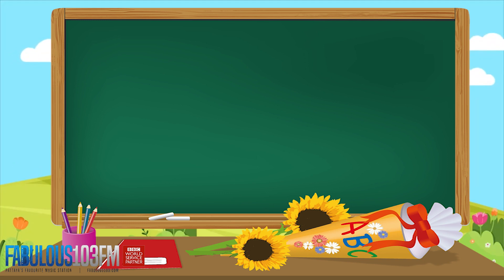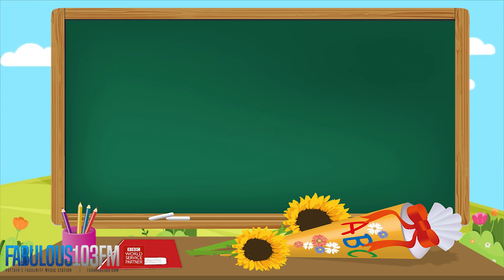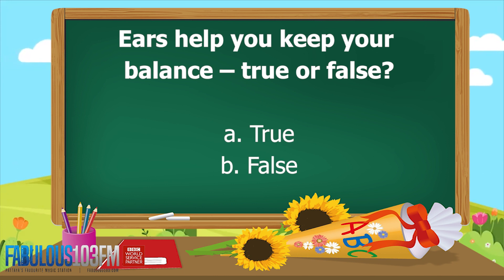New questions for today: which sea creature do pearls come from? Do they come from A: oysters, B: jellyfish, or C: crabs? And the second question for today: your ears help you to balance — is that A: true or B: false?